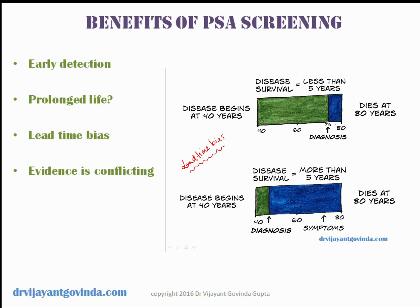For example, a man is supposed to live for 60 years and gets prostate cancer at age 40. Prostate cancer is a slow disease, so for the next 15 years he may suffer no harm. At age 55, because of his symptoms, he is diagnosed with prostate cancer and lives another 5 years before dying. Now, if we do PSA screening and detect prostate cancer at age 40, this man will receive treatment for the next 20 years — but he will still die at 60. So even though it appears he lived 20 years with the diagnosis, he actually got no benefit in terms of living longer.